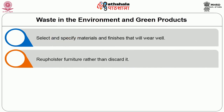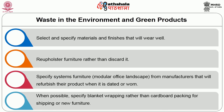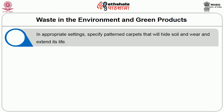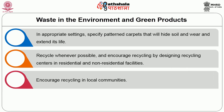Things to be considered: Select and specify materials and finishes that will wear well. Re-upholster furniture rather than discard it. Specify systems furniture — modular, office, or landscape — from manufacturers that will refurbish the product when it is dated or worn. When possible, specify blanket wrapping rather than cardboard packing for shipping of new furniture. In appropriate settings, specify patterned carpets that will hide soil and wear and extend its life. Recycle whenever possible and encourage recycling by designing recycling centers in residential and non-residential facilities. Specify green products whenever possible.